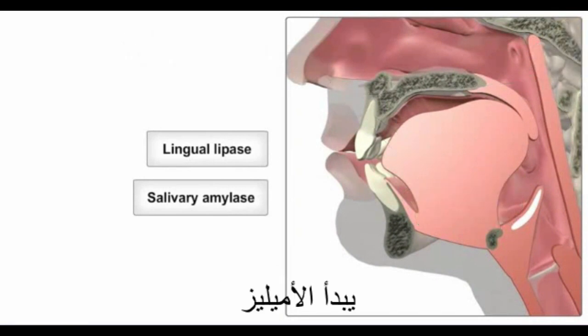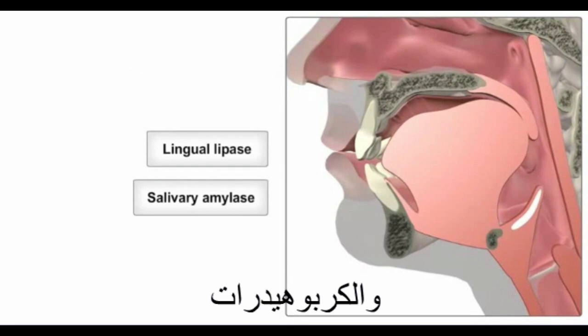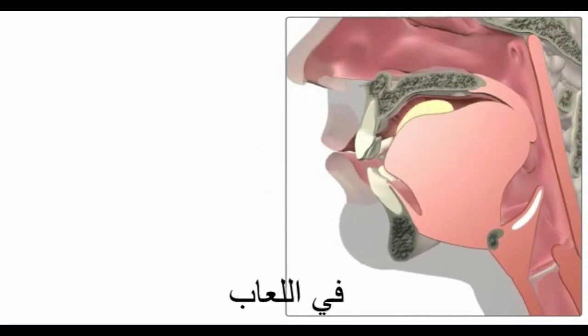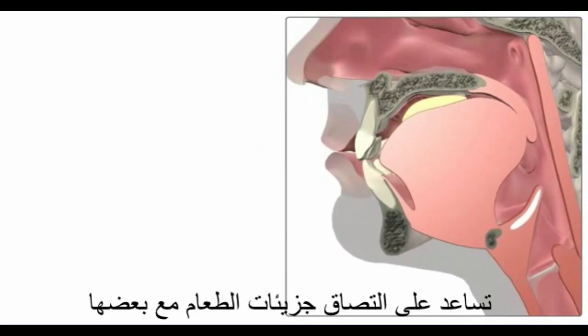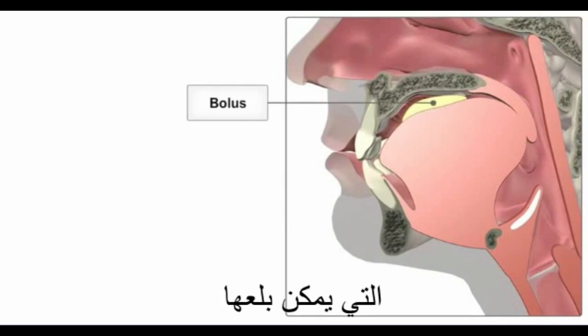Salivary amylase begins the chemical breakdown of starch and carbohydrates in the mouth. The water content of saliva helps bind particles together to form a bolus that can be swallowed.